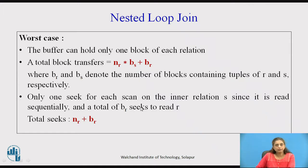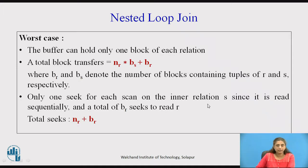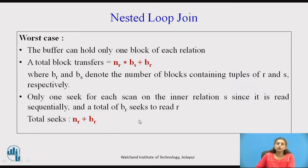For seek operations: S is read sequentially, so there is one seek per read of S. Since S is read n_r times (once per tuple of R), n_r seek operations are required for S. For R, blocks are brought one by one, requiring b_r seeks. Total seek operations in the worst case = n_r + b_r.